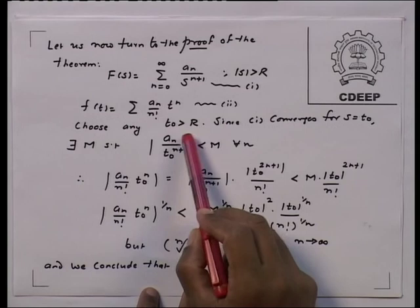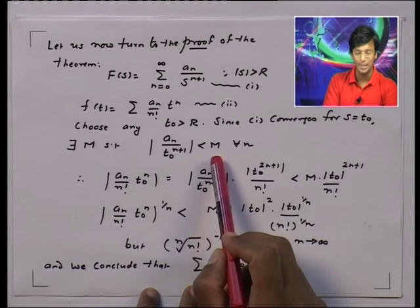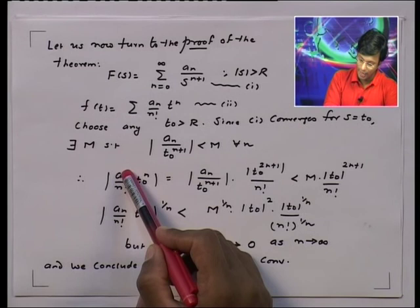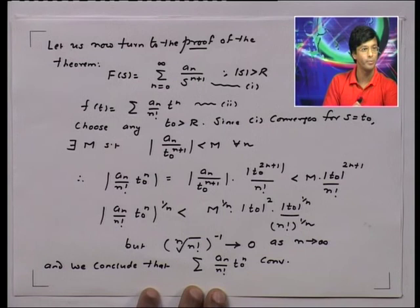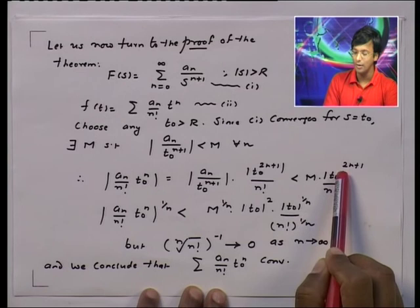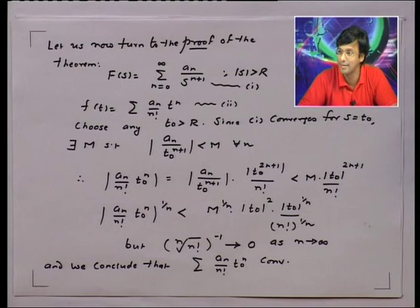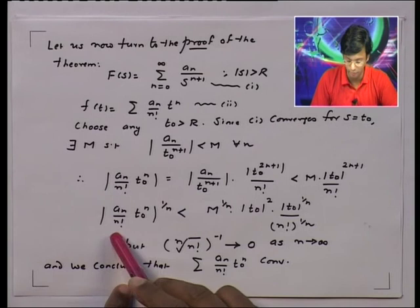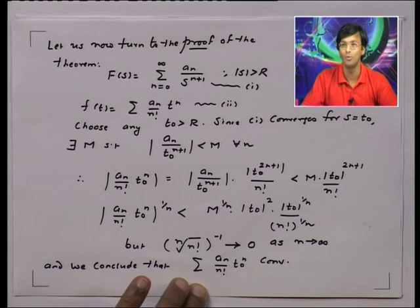It is a power series, so the same kind of trick must be employed. Pick a t0 which is bigger than r, so the series for F(s) will converge when s equals t0. That means a_n upon t0 to the power n plus 1 is less than M. Now write a_n upon n factorial times t0 to the power n as a_n upon t0 to the power n plus 1, multiplied and divided by t0 to the power n plus 1. The first piece is less than M, and what remains is t0 to the power n plus 1 upon n factorial.